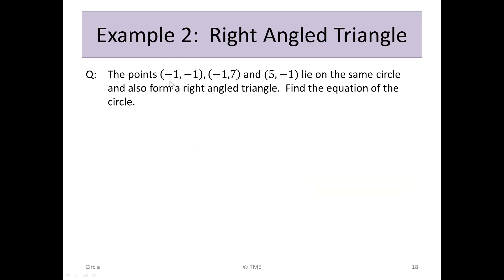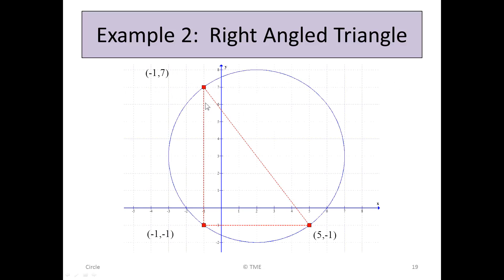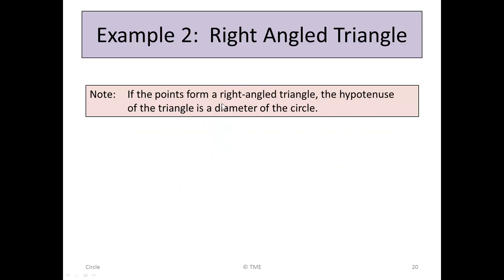Example 2. The points (-1, -1), (-1, 7), and (5, -1) lie on the same circle and also form a right-angled triangle. Find the equation of the circle. From your theorems, if three points lie on the same circle and form a right-angled triangle, then the hypotenuse — the longest side, opposite the 90° angle — is the diameter of the circle.